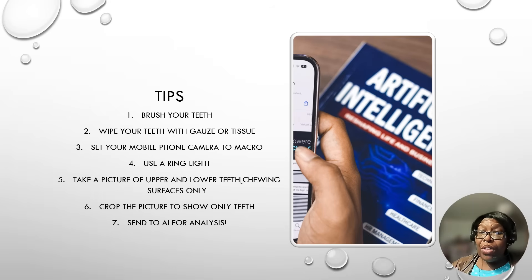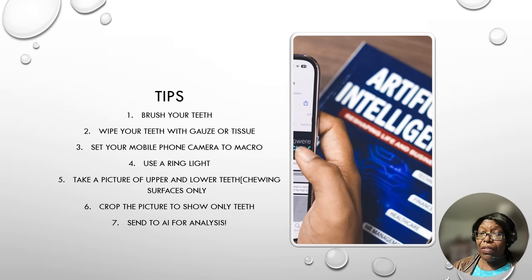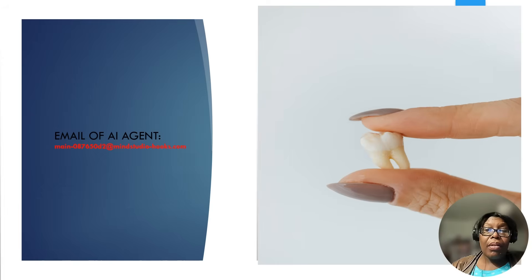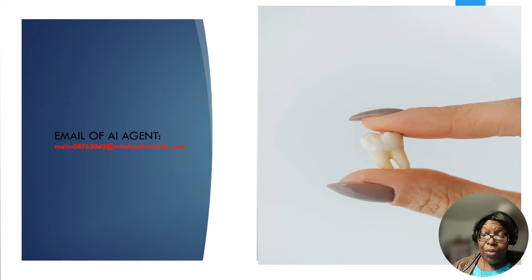Here are the tips for using the AI agent: brush your teeth, wipe with gauze, set your mobile phone to macro, use a ring light or flash, and take a photo of your chewing surfaces. Crop the picture and send it to the AI agent to analyze. You can also send it to a dentist who is far away to advise you whilst going through your struggles. When you are ready you can see the dentist in person. The AI agent email is main-087650d for delta-2 at mystudio-hooks.com.